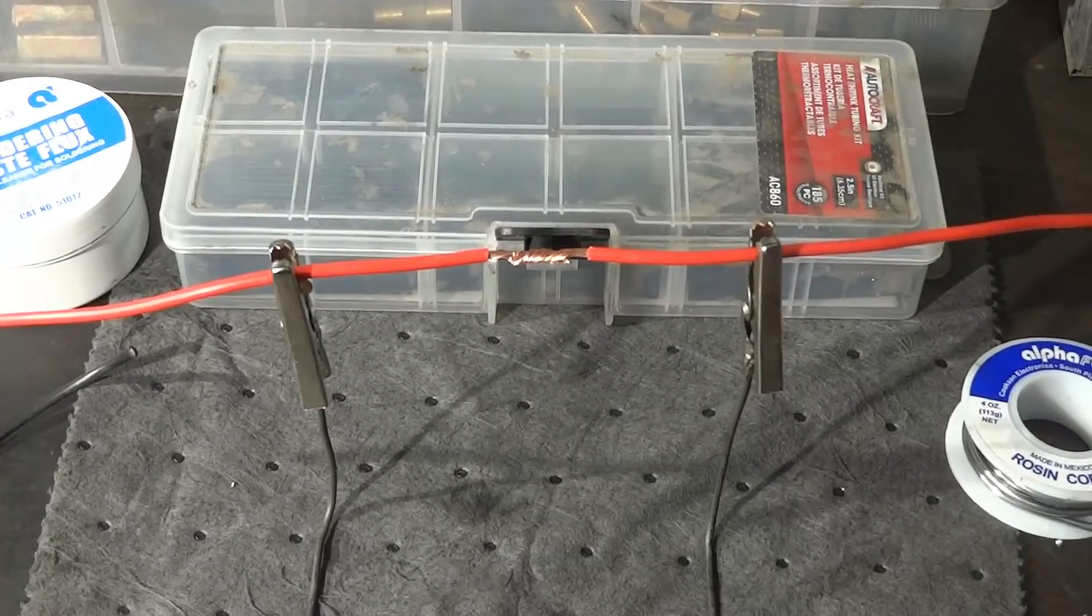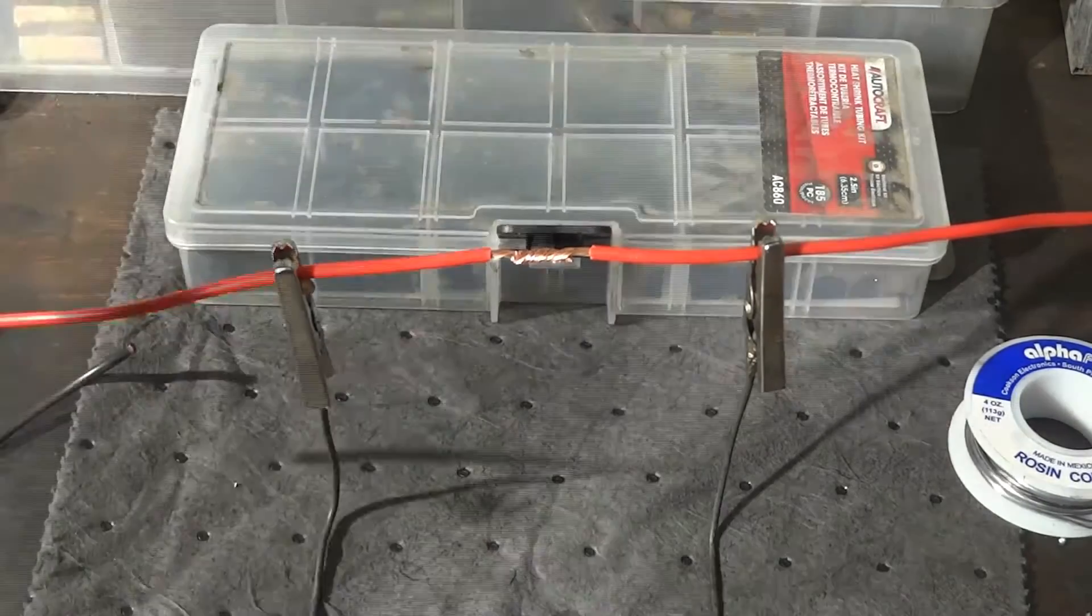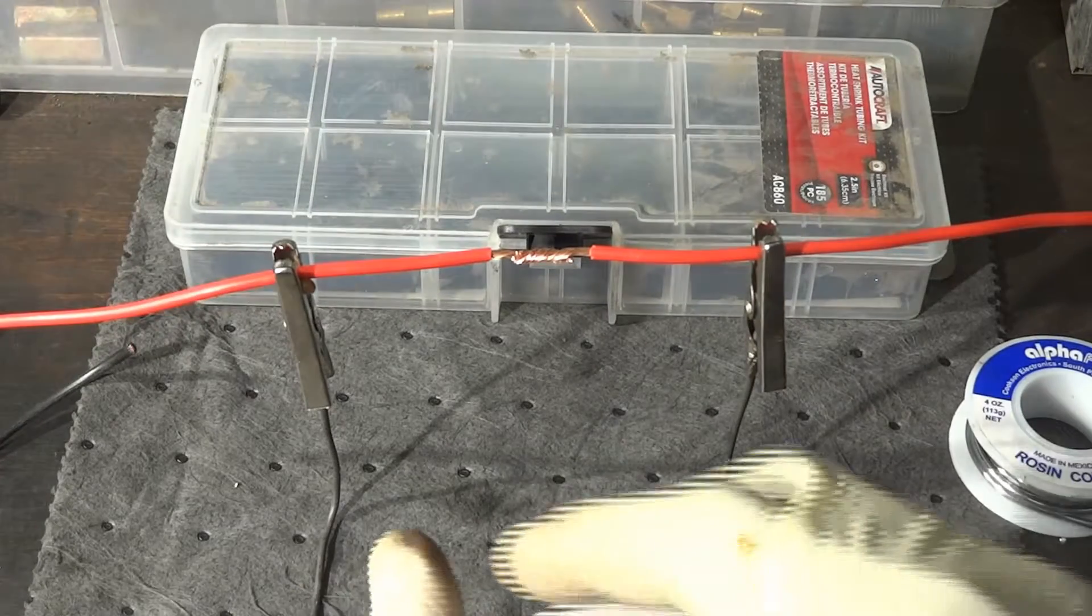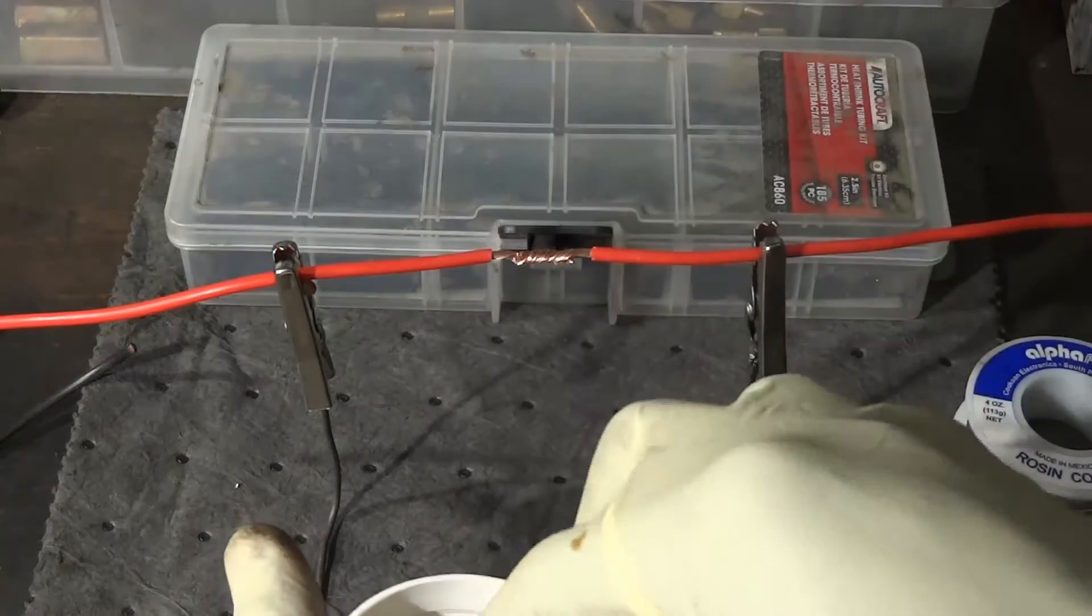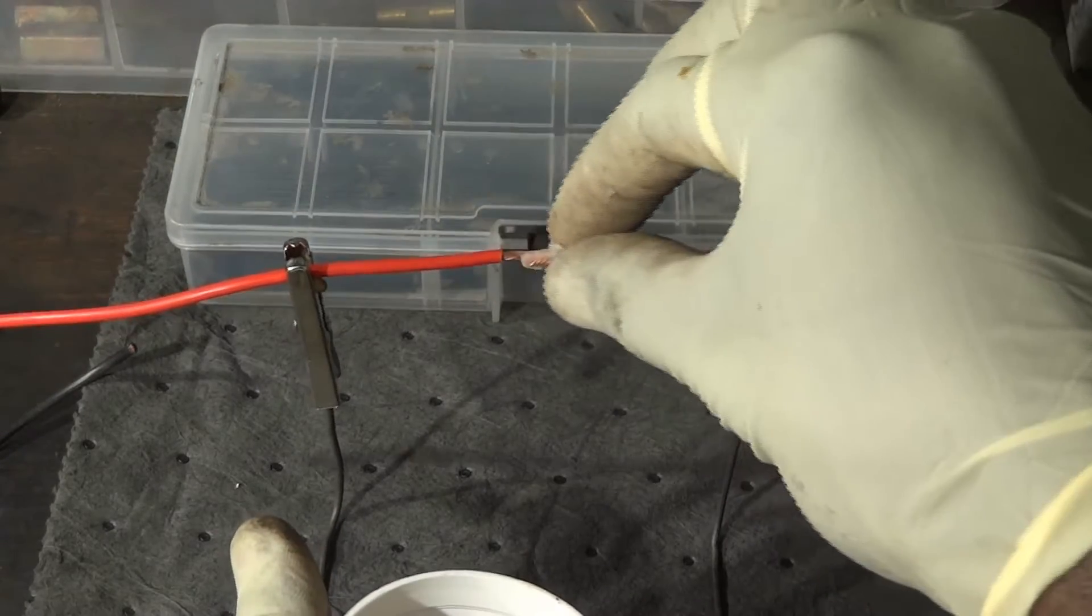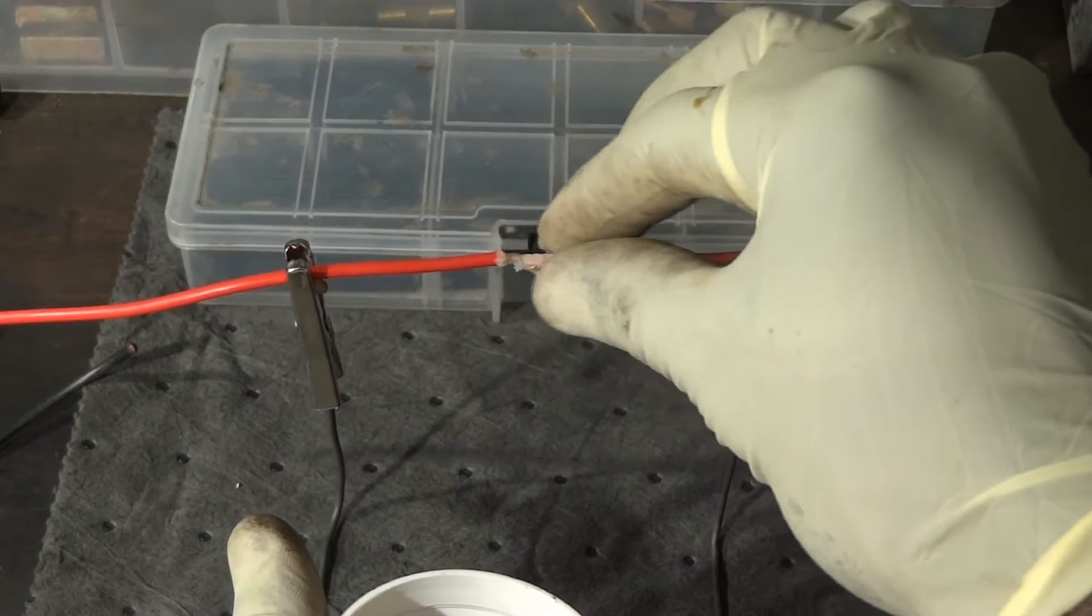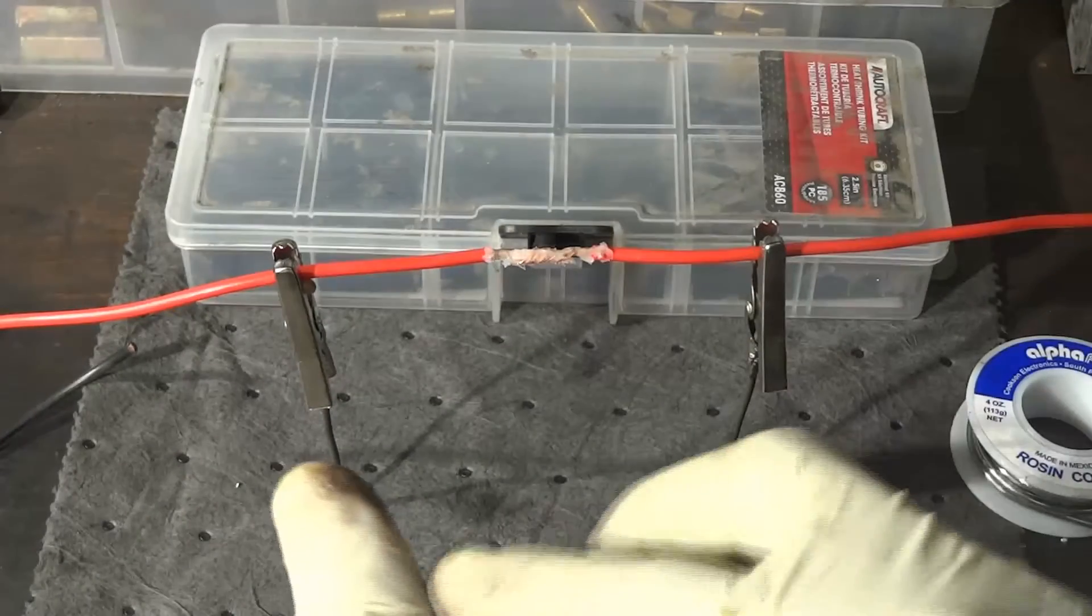So now we are ready to solder. We're going to apply a little bit of flux paste on the area we're going to be soldering. You don't want to put too much. A little bit is enough.